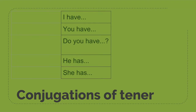So the conjugations of tener that we're going to start with — we're going to do five, just like we did last time. We're going to start with I have. I have in Spanish is yo tengo. Let's take a look at some applications of the verb yo tengo in practice.